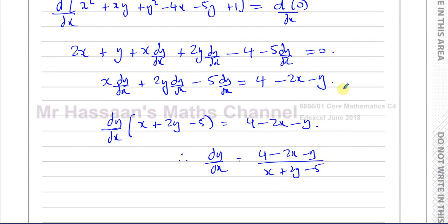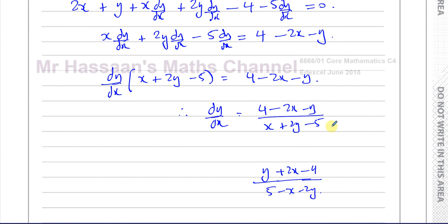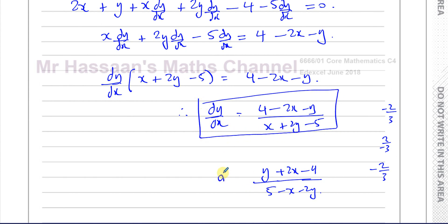If you had kept the dy/dx terms on the right side, your answer would look like (y + 2x − 4) / (5 − x − 2y), but these are exactly the same expression — everything has the opposite sign on top and bottom, just like −2/3 and 2/−3 both equal −2/3. Either form is perfectly acceptable.